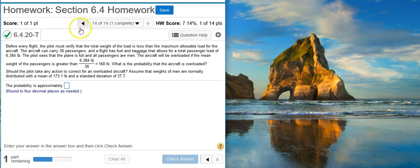The first part of this problem is asking us for the probability that the aircraft is overloaded. To get the probability, we're going to be using the normal distribution calculator in StatCrunch, because here it says that all the passengers are men, and we're assuming that the weights of the men are normally distributed.